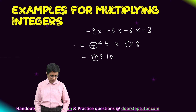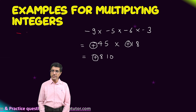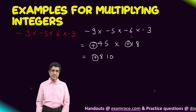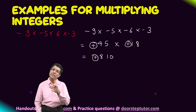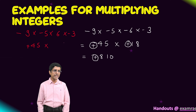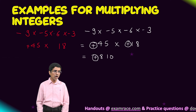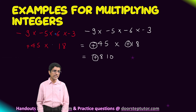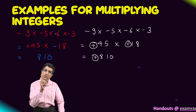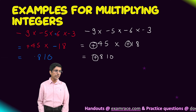Now let's tweak this problem slightly. Instead of minus 6, I am now using just 6 — a positive 6. So the problem is minus 9 into minus 5 into 6 into minus 3. Again, 9 fives are 45, and because both were negative, their sign becomes positive. Then 6 into 3 is 18. But because this 45 was positive and this 18 came from a negative number, positive into negative gives a negative sign. So 45 into 18 still gives magnitude 810, but the final answer is negative 810.